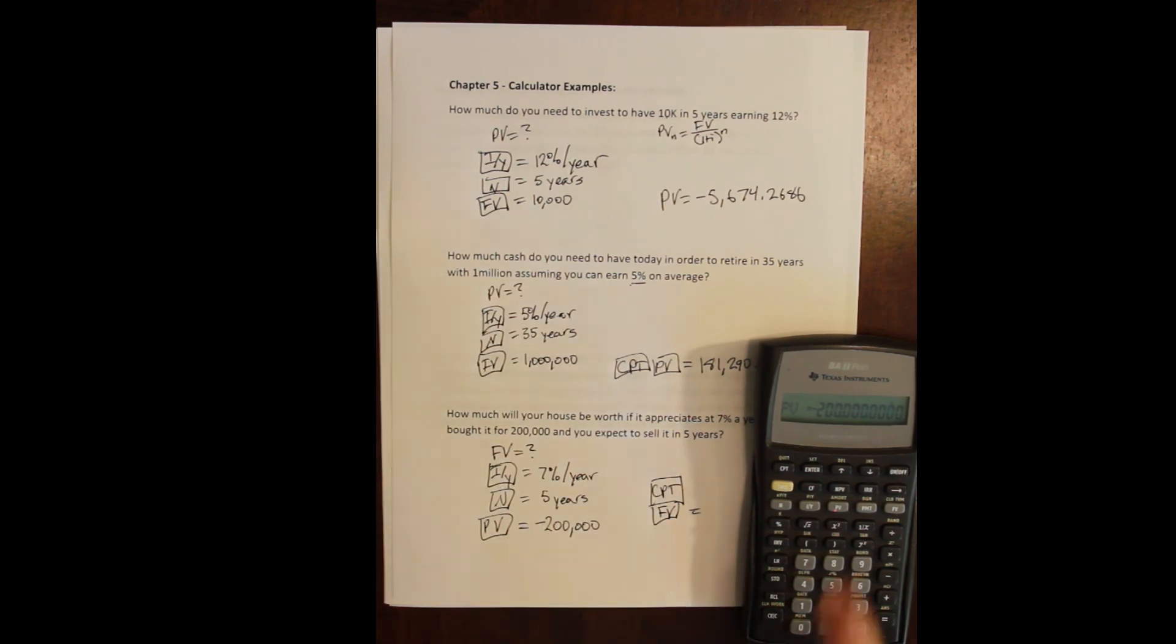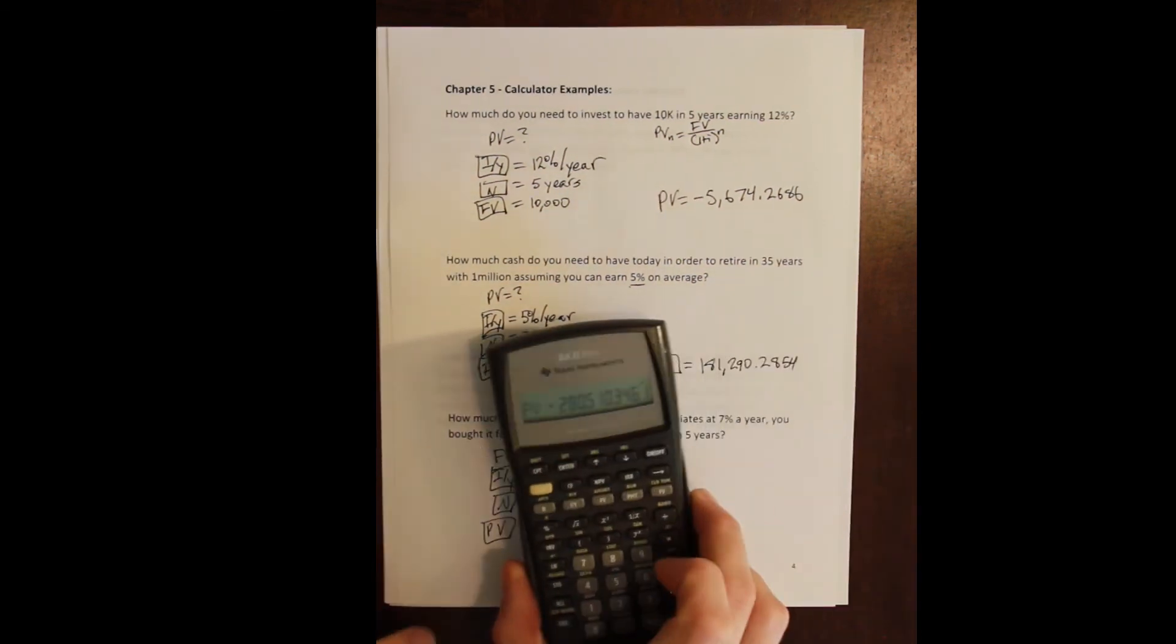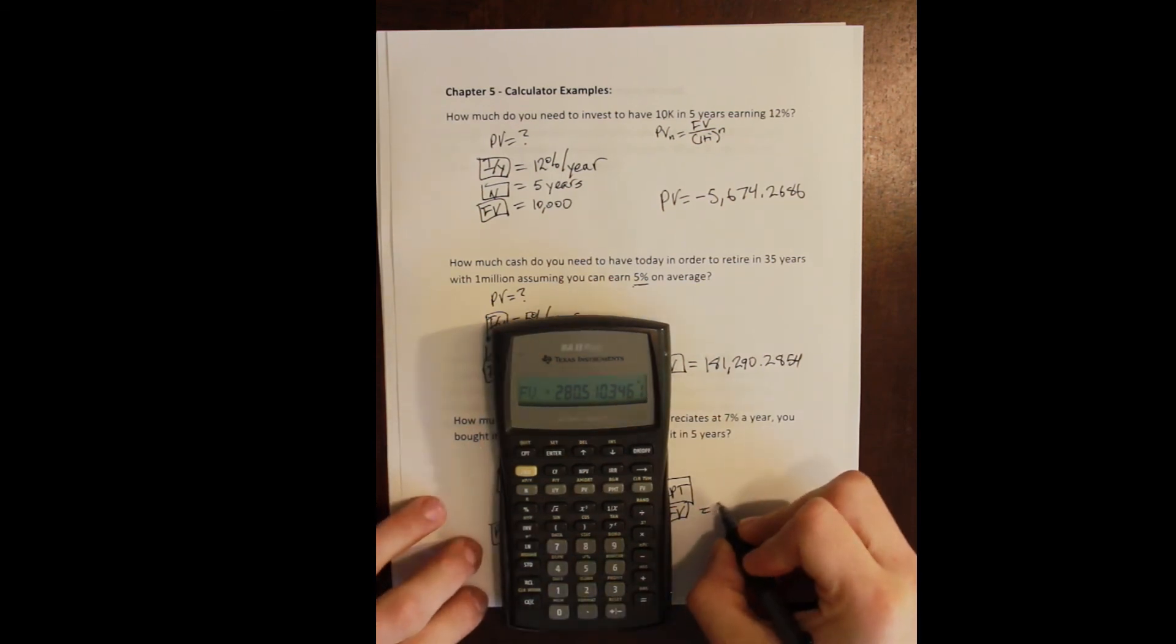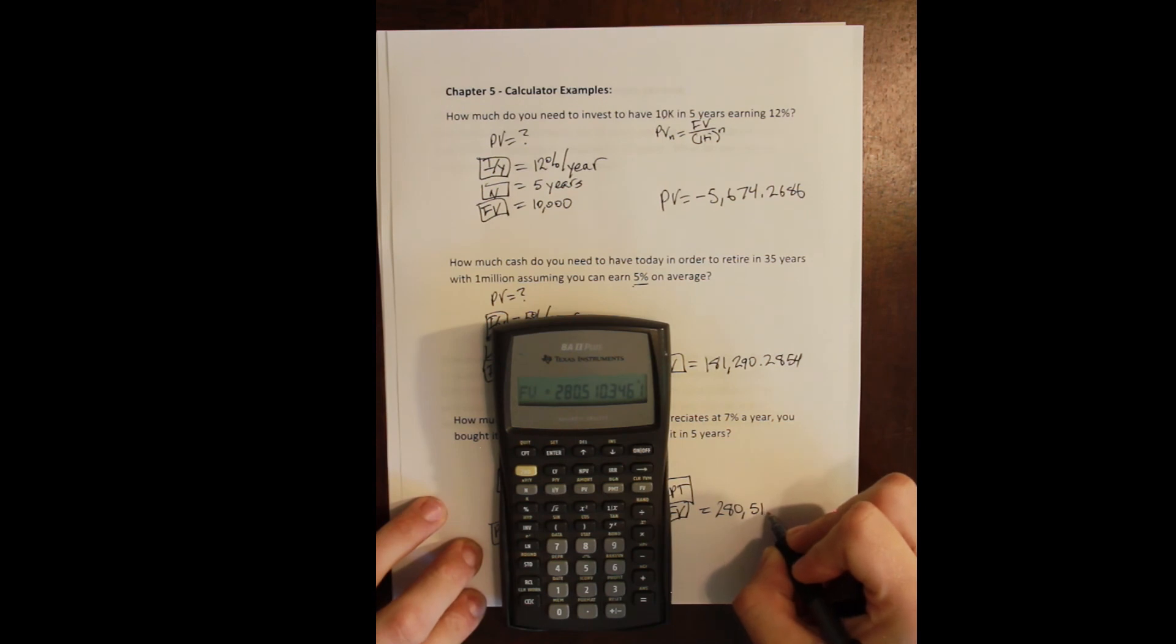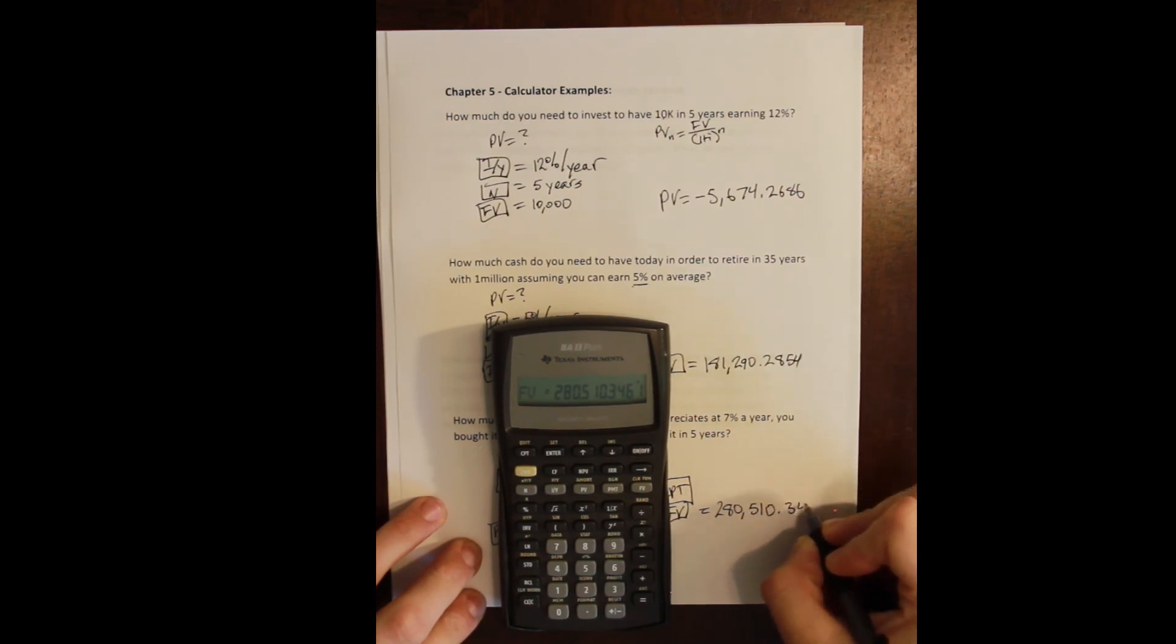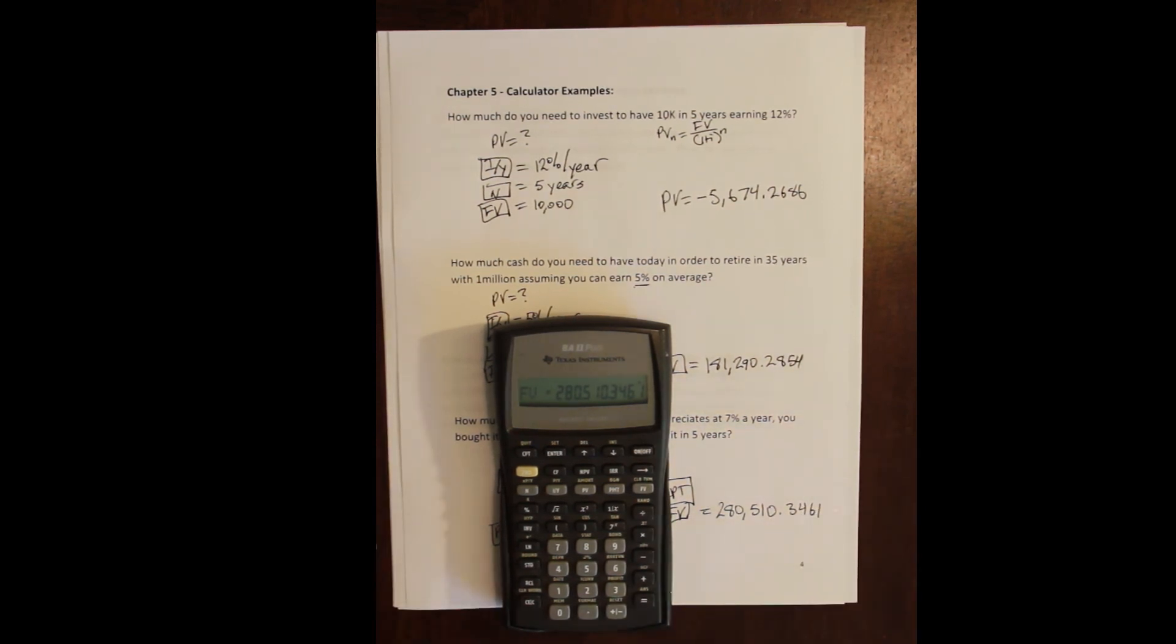Now to solve for future value instead of present value, we just press compute future value and we get our answer: $280,510.34.